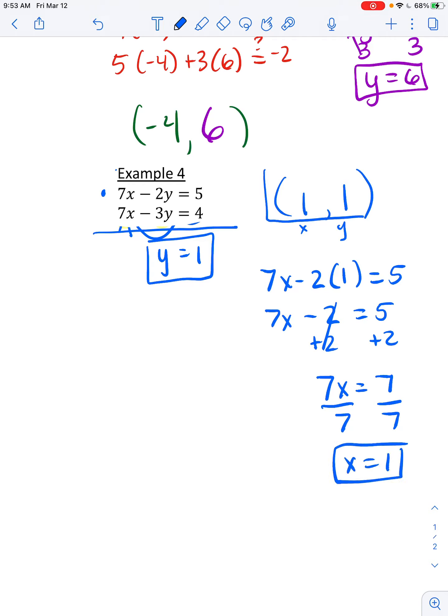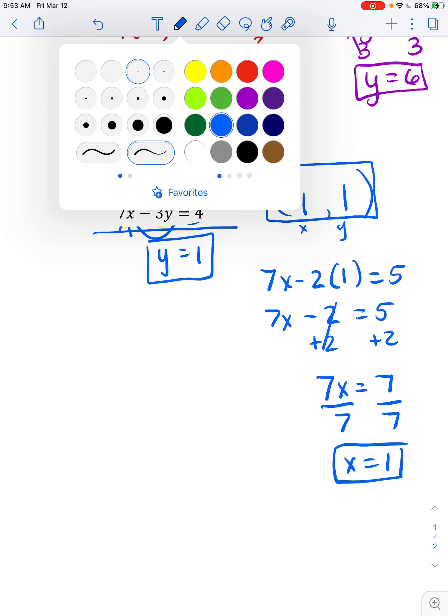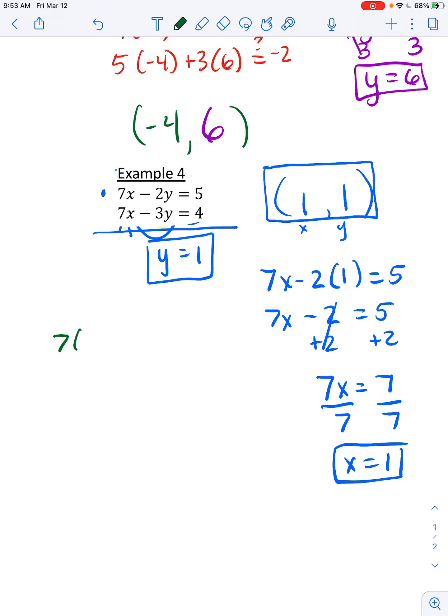And you might feel like that's kind of strange. And you think, I don't know if that's right. Well, if you don't know if it's right, you can check it out. Go back, put a 1 in for x and a 1 in for y. 7 minus 2. That checks out. Second equation, put a 1 in for x and a 1 in for y. 7 minus 3. 4. That checks out.